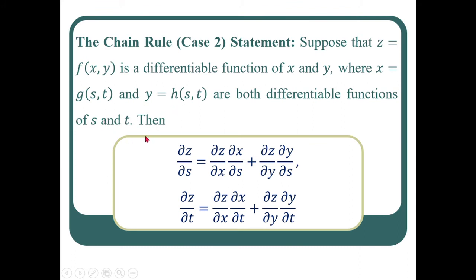Here z is a differentiable function of x and y, and x and y are differentiable functions of s and t. So indirectly z becomes a differentiable function of s and t. When differentiating z with respect to s, we differentiate z with respect to x and multiply by ∂x/∂s, then add the term with ∂z/∂y times ∂y/∂s. Similarly we get the formula for ∂z/∂t.